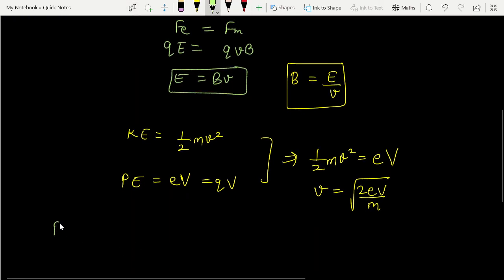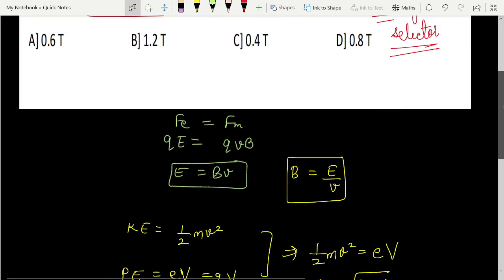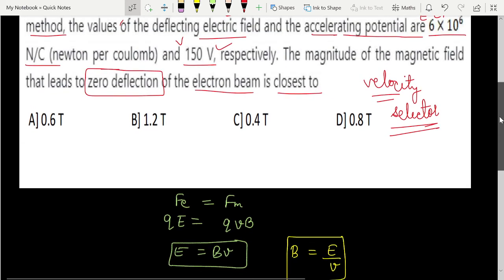So B you will get here, E given was 6×10⁶ newton per C, and V value you will get here root 2EV upon m. So 2 into electronic charge 1.6×10⁻¹⁹ into voltage difference was 150. V value was 150. We will check. 6×10⁶, so your electric field is 150V. Correct.